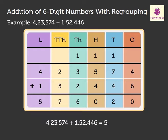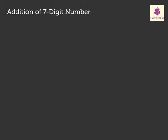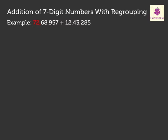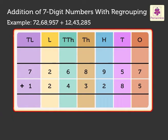Hence, the sum of 4,23,574 and 1,52,446 is 5,76,020. Now, let us add the 7-digit numbers 72,68,957 and 12,43,285. Write the numbers in the place value chart.